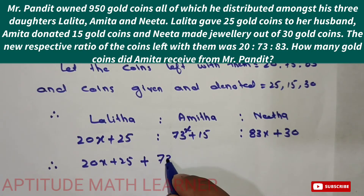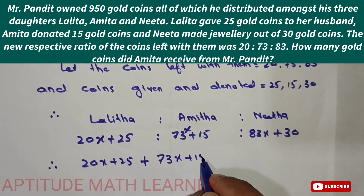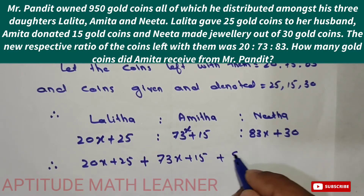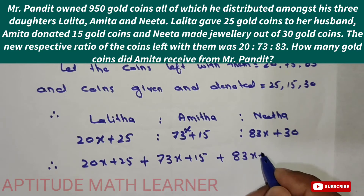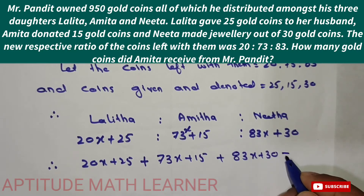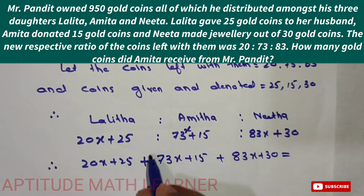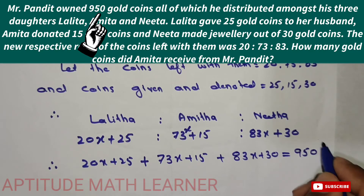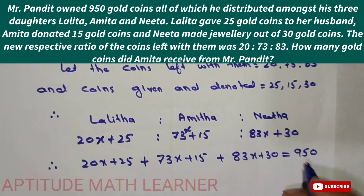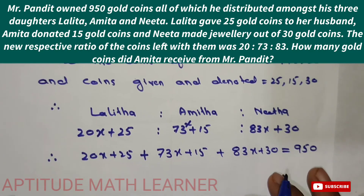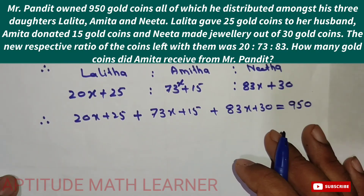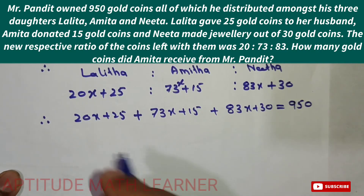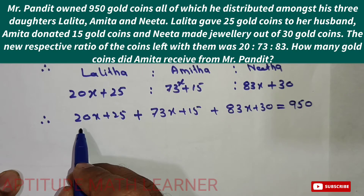So the equation becomes: (20x + 25) + (73x + 15) + (83x + 30) = 950. The total of all coins, including what was given away and what remains, equals the original 950 gold coins that Mr. Pandit distributed.